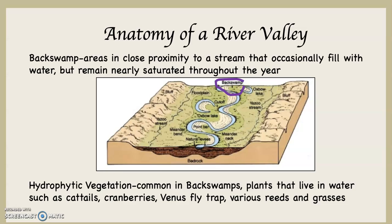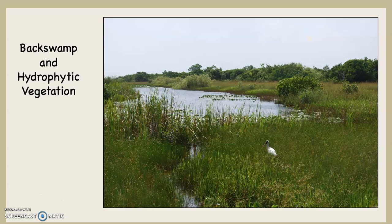Cranberries — not the band, but literally cranberries. Venus flytraps, yes, that very famous thing. And various reeds and grasses. When the water dries out in the back swamp, these things tend to die off — they really, literally need to be living in water. Here we have a back swamp with hydrophytic vegetation, and an egret — see it there in the foreground?